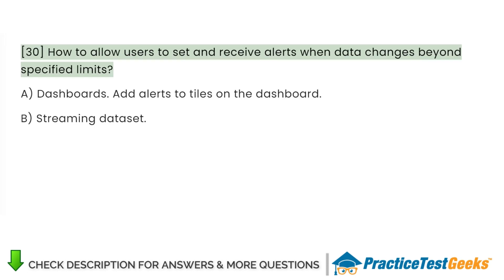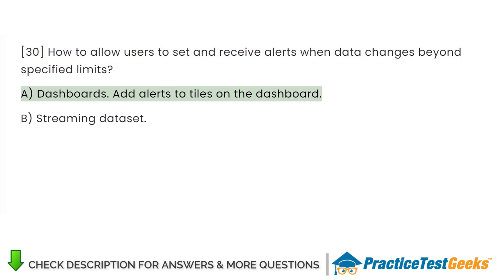How do you allow users to set and receive alerts when data changes beyond specified limits? A. Dashboards — add alerts to tiles on the dashboard. B. Streaming dataset.